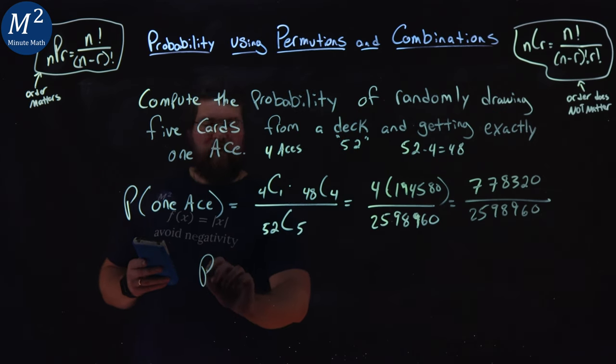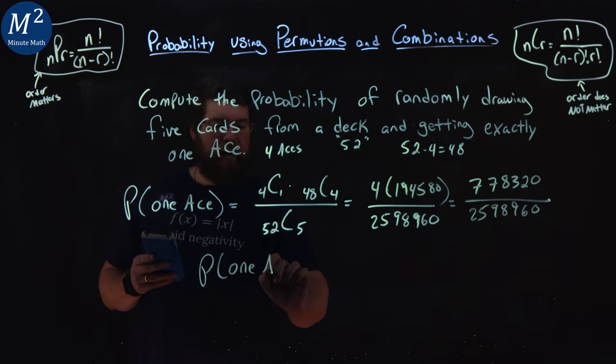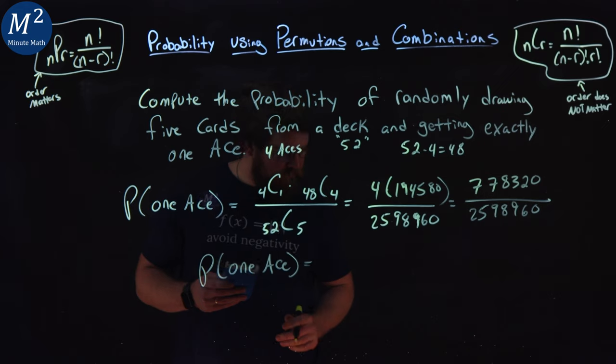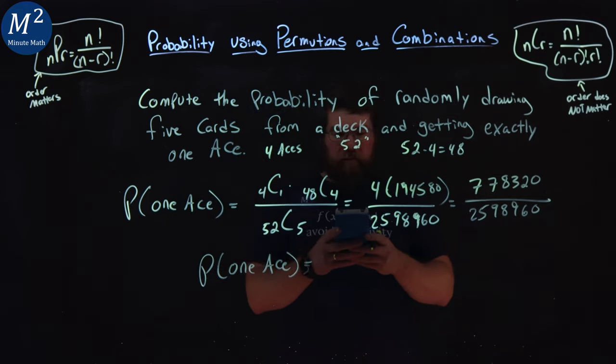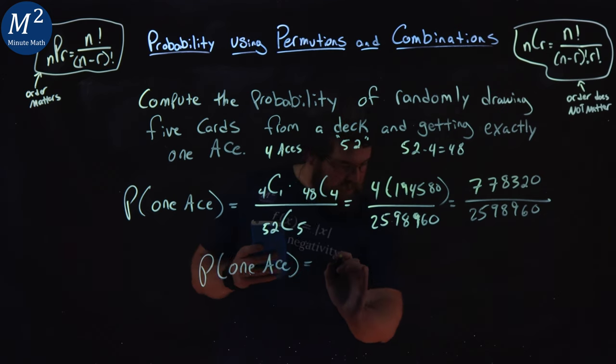And if we want to write that as a decimal, probability of one ace. And the decimal divided by 2,598,960. So I get the same thing.